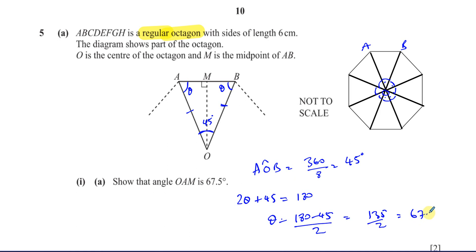So we can say two theta plus 45 degrees equals 180. Therefore theta equals (180 minus 45) divided by 2, which is 135 divided by 2, which gives us 67.5 degrees. And that's exactly what we had to show. Especially when they tell you to show an angle, you have to show your steps very carefully.